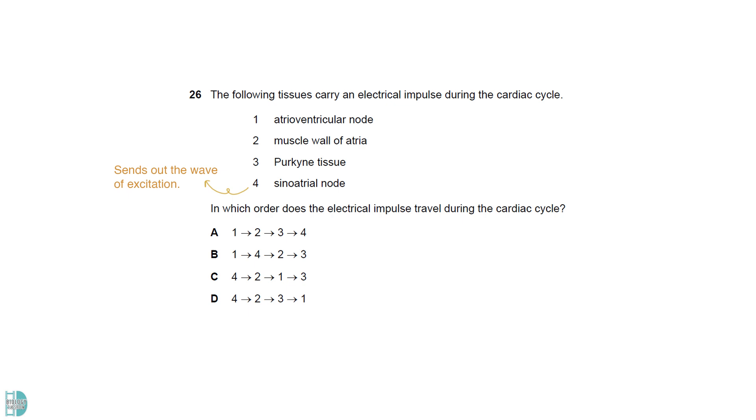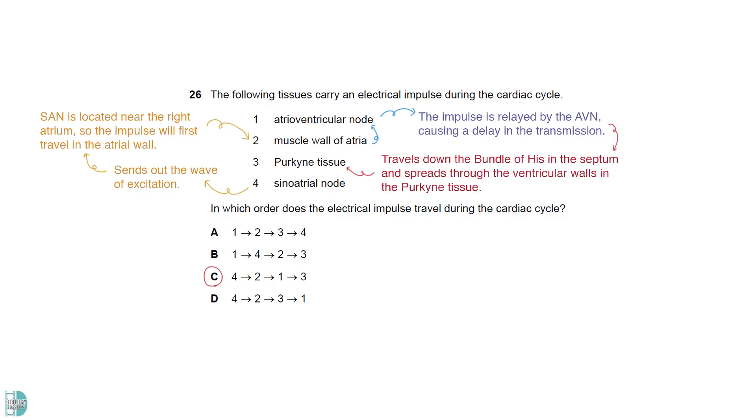The sinoatrial node sends out the wave of excitation. It is located near the right atrium, so the impulse will first travel in the atrial wall. Then it is relayed by the AV node, causing a delay in the transmission. Lastly, it travels down the bundle of His in the septum, and spreads through the ventricular walls in the Purkinje tissue.